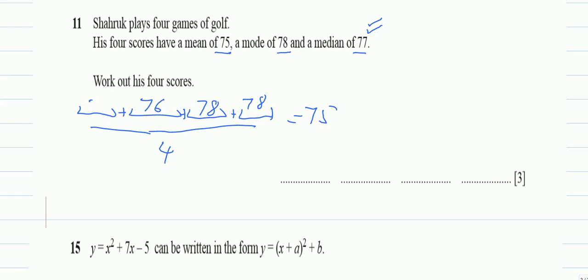We will solve this equation: x plus 76 plus 78 plus 78 equals 232. And 4 was being divided on the right-hand side, so it will be multiplied: 75 times 4 gives 300. So x equals 300 minus 232, and finally x equals 68. I got my fourth value.